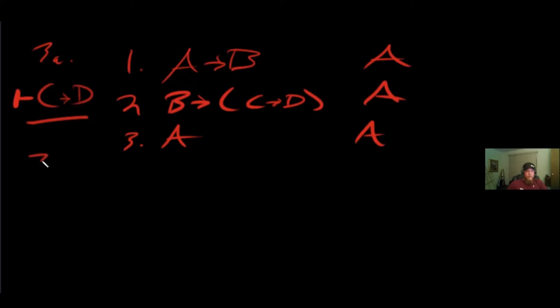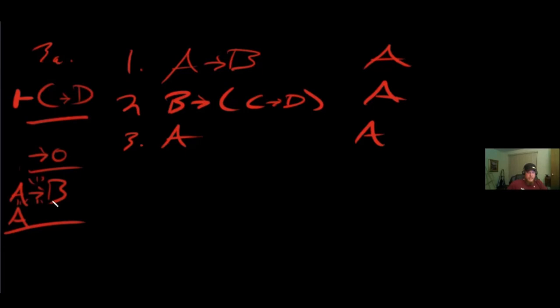Think of it like an RPG — right now you have one move: arrow out. If you have A arrow B and you have A, that's the key that unlocks B. Look for any arrows not in parentheses. The arrow in line 2 is locked inside — ignore it for now. I have A arrow B in line 1 and A arrow (C arrow D) in line 2 not in parentheses.